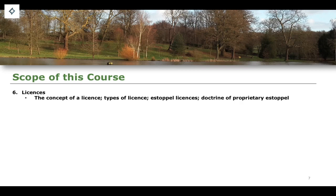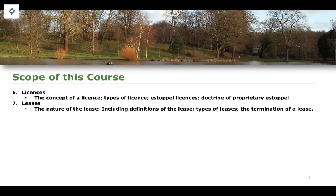Section six will look at licenses — what a license is, the types of licenses that exist including estoppel licenses, and the doctrine of proprietary estoppel specifically. Section seven will cover the leasehold and the concept of leases, including the nature of the lease, definitions — most pertinently from the case of Street v Mountford — and the types of leases that exist, as well as the termination of a lease.